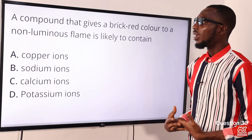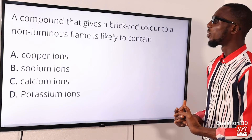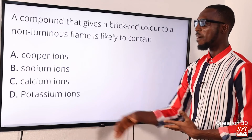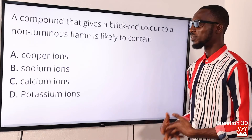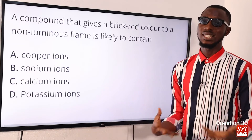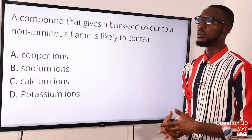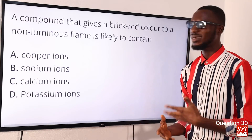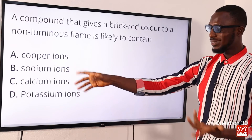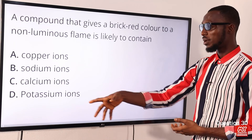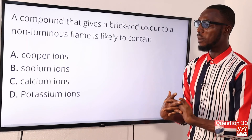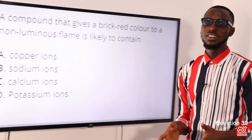Question 30: A compound that gives a brick red color to a non-luminous flame is likely to contain what? Brick red indicates calcium ions. For copper ions we see bluish-green; for sodium ions, persistent yellow; for potassium, lilac or violet. So the correct option is option C: calcium ions.